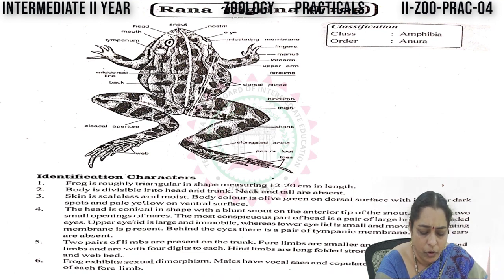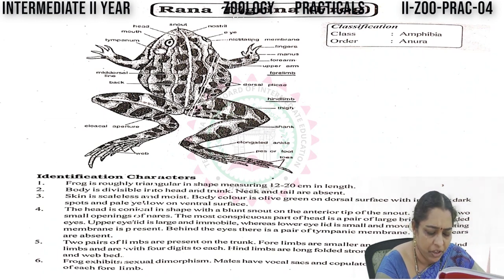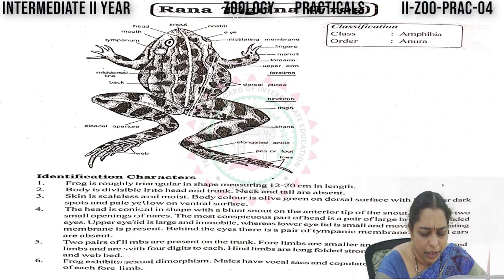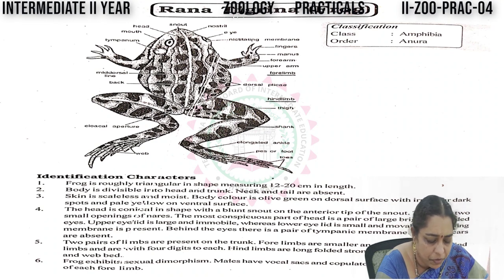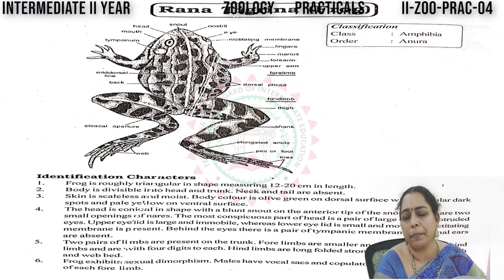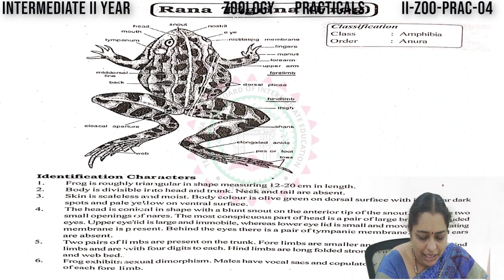Two pairs of limbs are present on the trunk. The fore limbs are smaller and weaker than the hind limbs, with four digits to each limb. The hind limbs are long, folded, and strong, with five digits to each, and with webbed feet. The web is present in between the digits of the hind limbs. The frog exhibits sexual dimorphism — males have vocal sacs and copulatory pads on the first digit of each fore limb. With the help of the vocal sacs and copulatory pads, we can differentiate the male from the female.